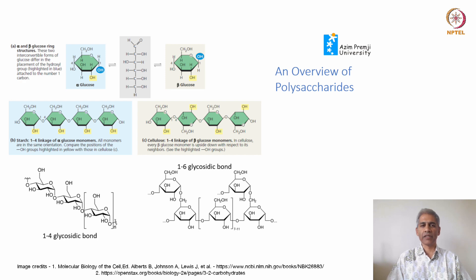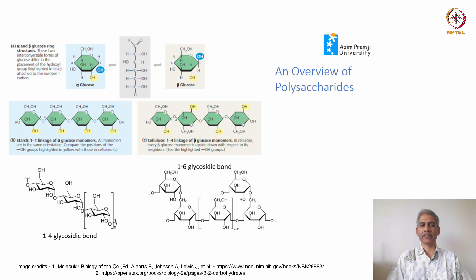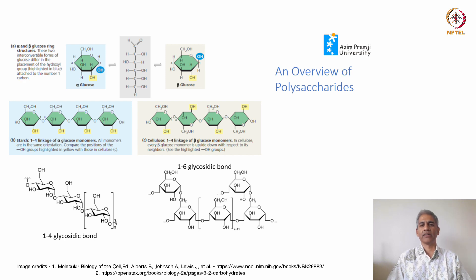In alpha glucose, the OH group is below the plane of the ring. In beta glucose, it is above the plane of the ring. This matters because the kinds of structures you can make using alpha glucose or beta glucose are very different. The two main structures you will make are starch or cellulose.